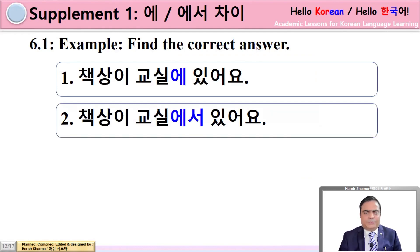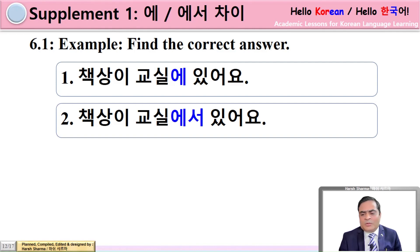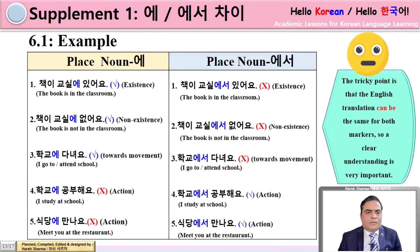Now check these two sentences and find the correct answer. If you can find the correct answer, you know the difference between 에 and 에서. Number one: 책상에 켜있어요 or 책상에서 있어요 — which one is correct? Number one is correct. 에 must be followed by 있다, 없다, 가다, 오다, 다니다. After 에서, there must be an action verb. So number one is the correct answer.